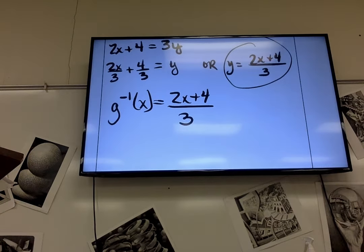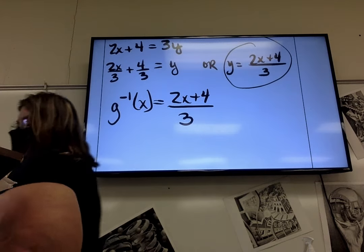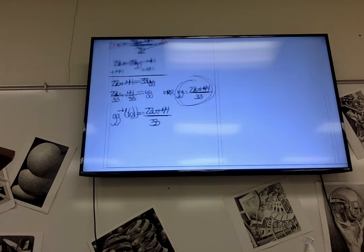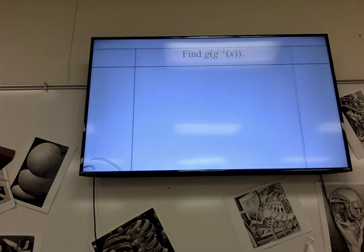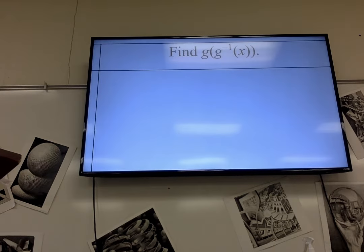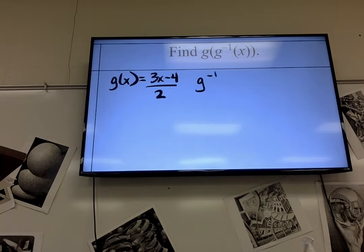And the next one's going to have us do a composition of functions. We're going to put one inside the other. So, we're going to find g of g inverse of x. I know that g of x is 3x minus 4 over 2. And we just found g inverse of x. And it was 2x plus 4 over 3.